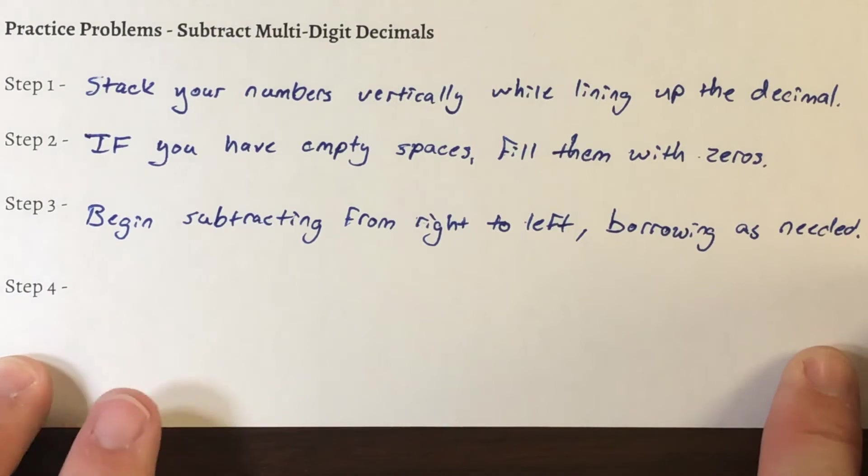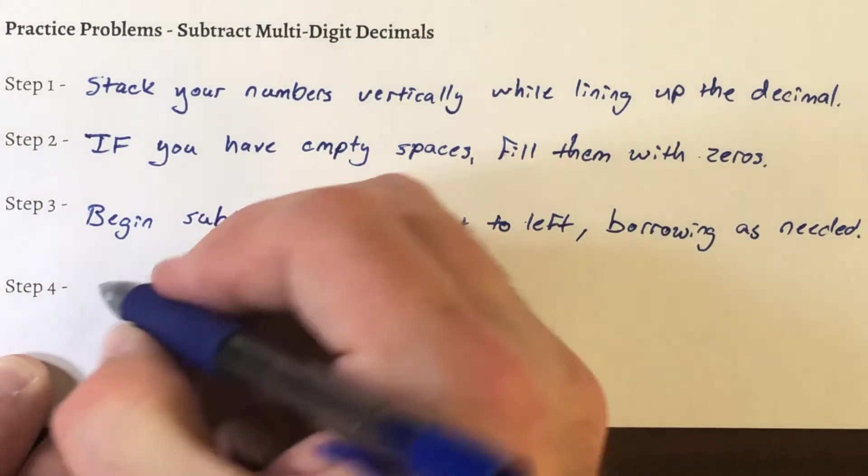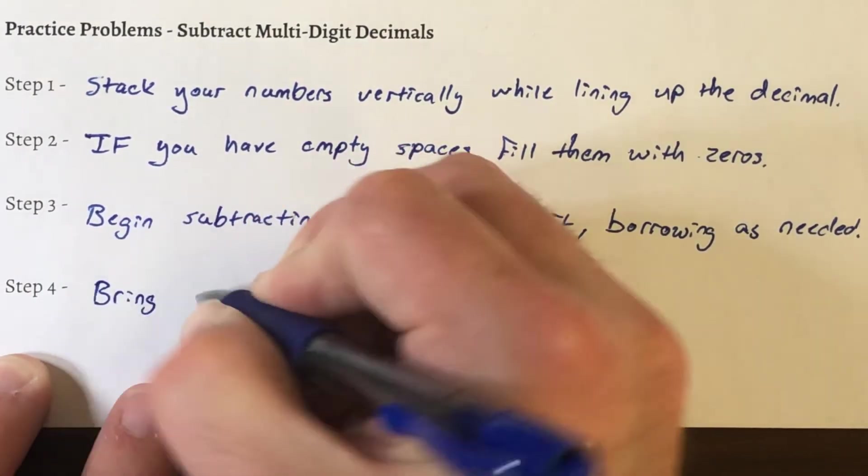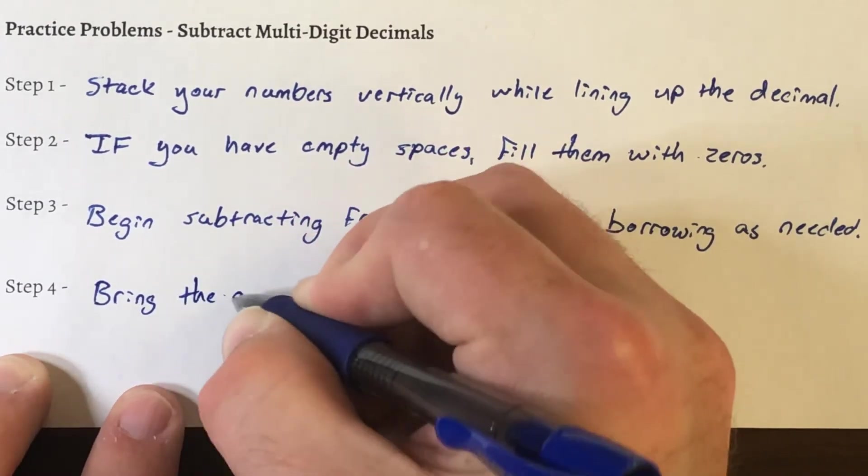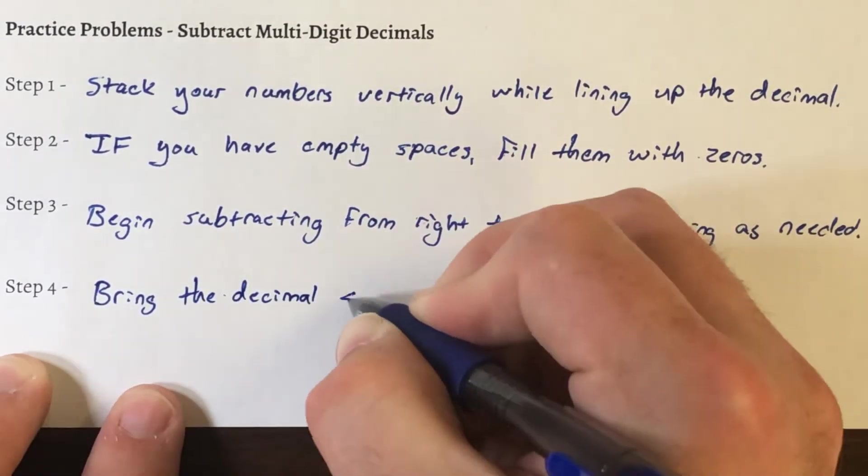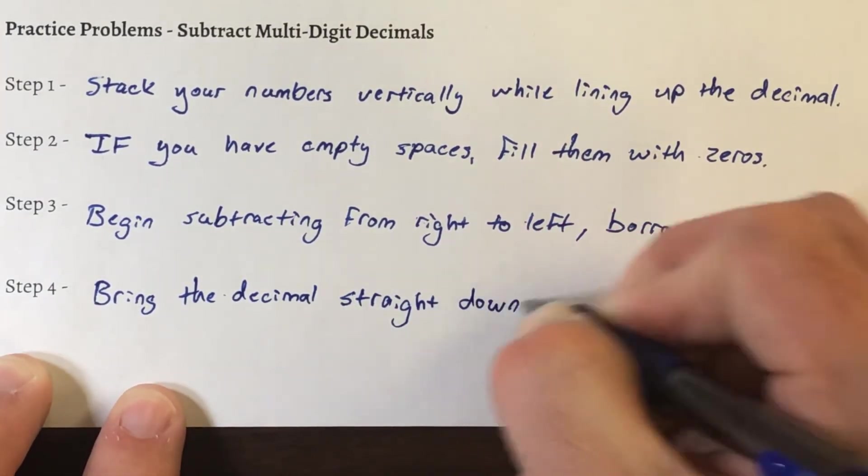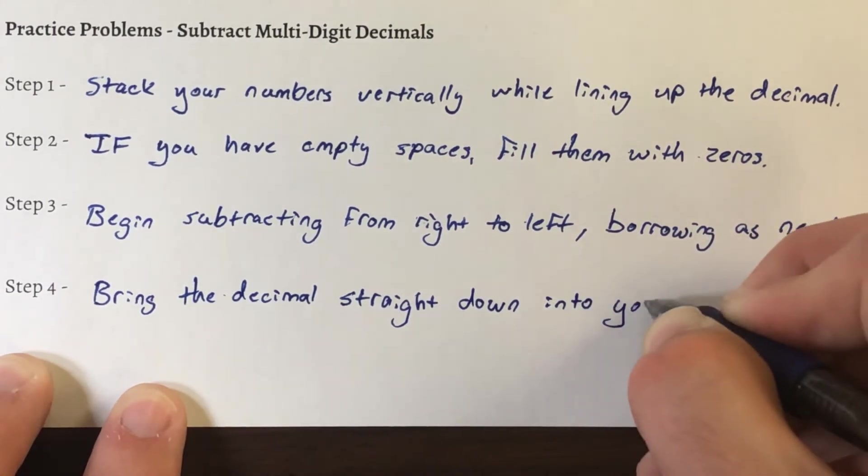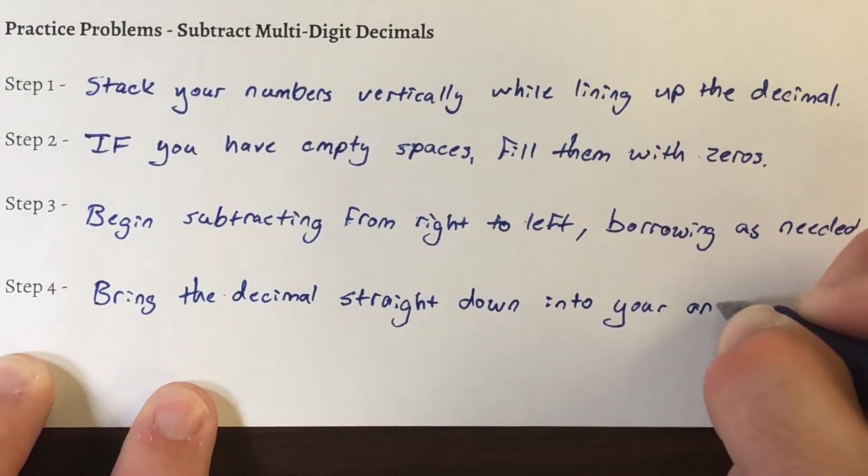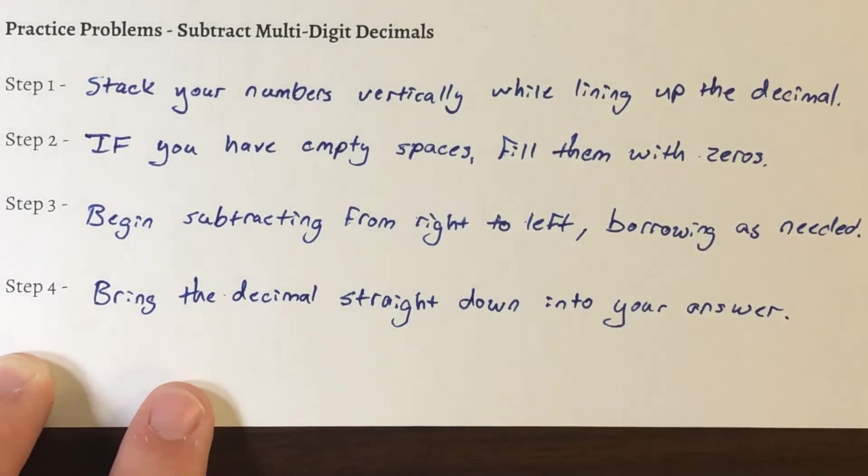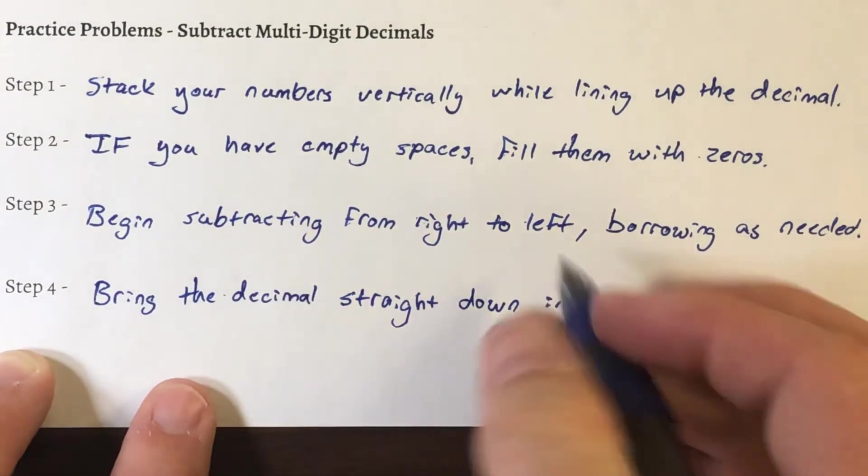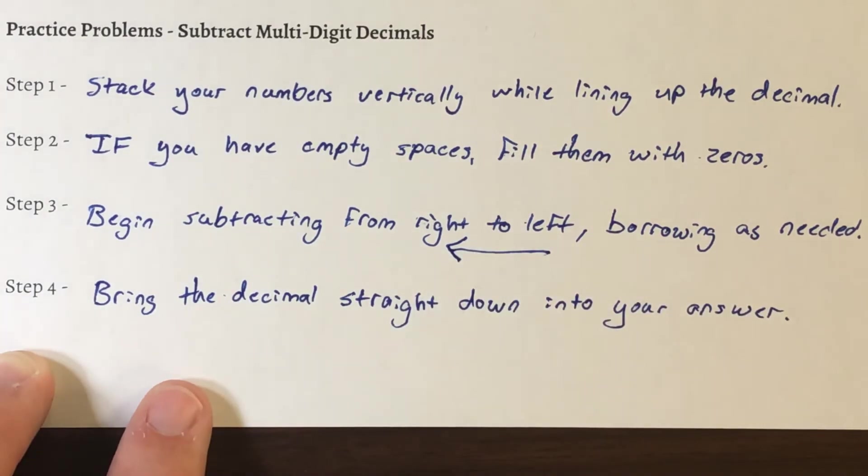And then step 4, bring the decimal straight down into your answer. So stack your numbers, line up the decimal. If you have empty spaces fill them with zeros. Subtract right to left, work your way that way, borrow as needed, and then bring your decimal straight down into your answer.